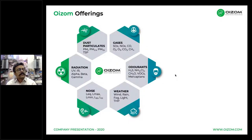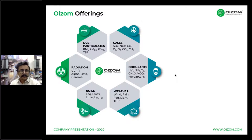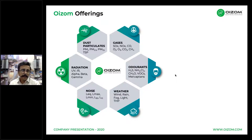Our sensor-based CAQMS can measure more than 30 parameters including dust particulates like PM1, 2.5, 10, and 100; gases like SOx, NOx, carbon monoxide, oxygen, ozone, and carbon dioxide; odorants like hydrogen sulfide, ammonia, chlorine, formaldehyde, and volatile organic compounds; and weather parameters like wind speed, wind direction, rainfall, fog, light intensity, temperature, humidity, pressure, noise levels, and UV and infrared radiation.